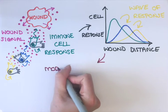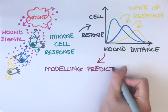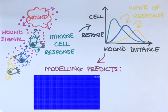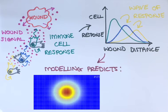Using this information, we can simulate how the wound attractant spreads out from the wound site in space and time. In this way, our computational modelling approach has revealed information about the wound attractant that we couldn't have discovered from the biology alone.